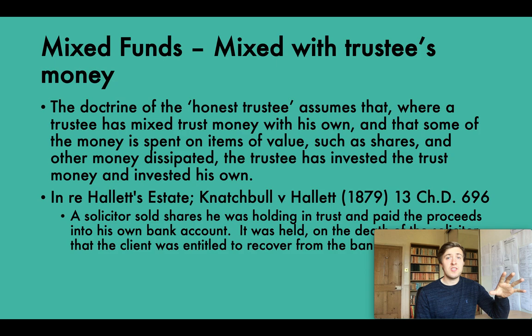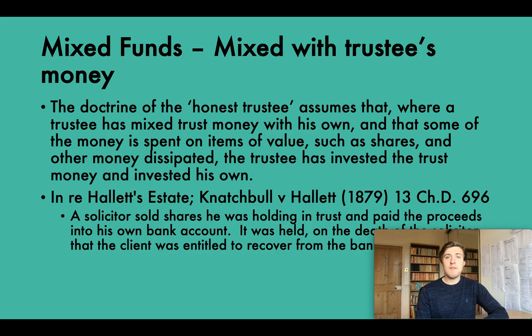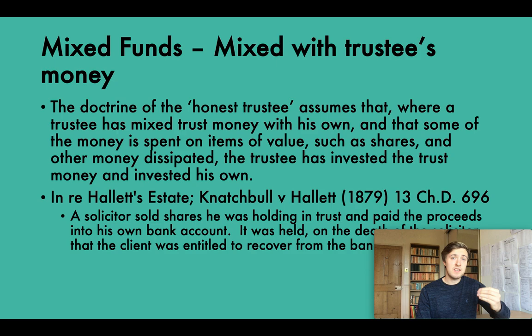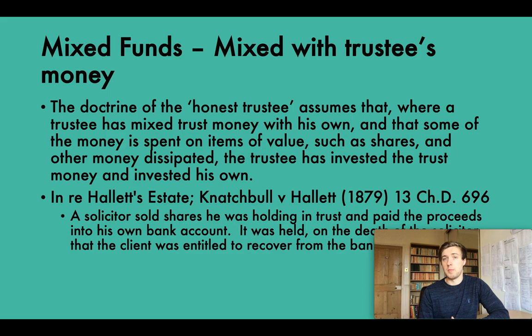Hallett was a solicitor who was a bailee of Russian bonds for his client Cotterill. Hallett sold the bonds and paid all of the proceeds into his own bank account, then subsequently died. Cotterill claimed proprietary rights over the money in Hallett's bank account. It was held that where a trustee has money in a personal bank account to which trust money is added, it is assumed the trustee is acting honestly when paying money out — paying from his own money on investments which lose money, not the trust money — so the trust money remains intact.